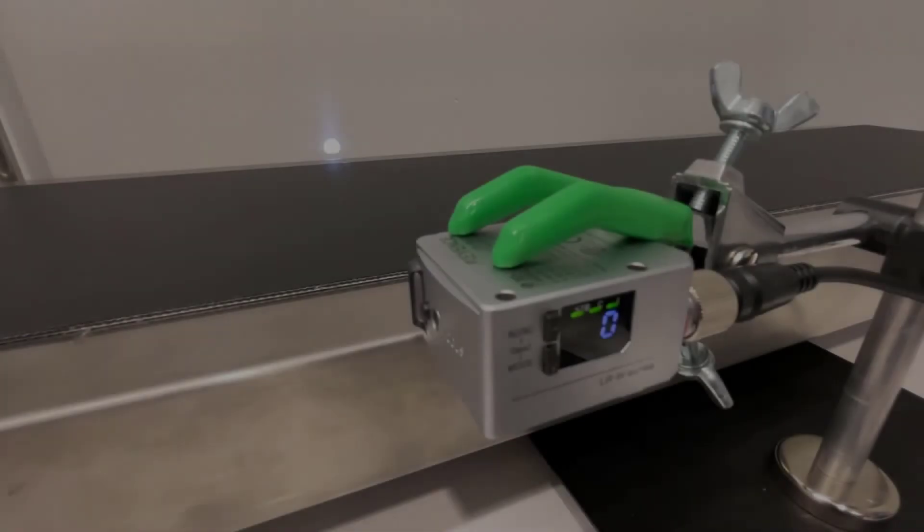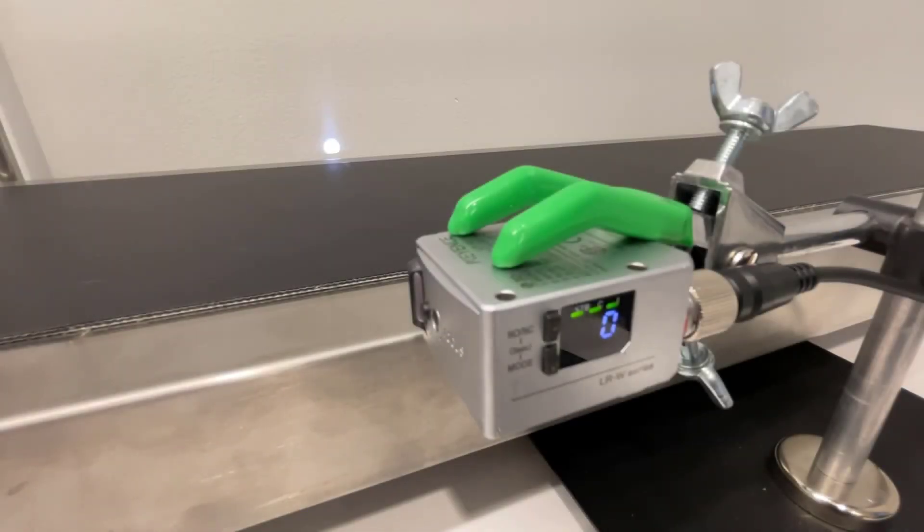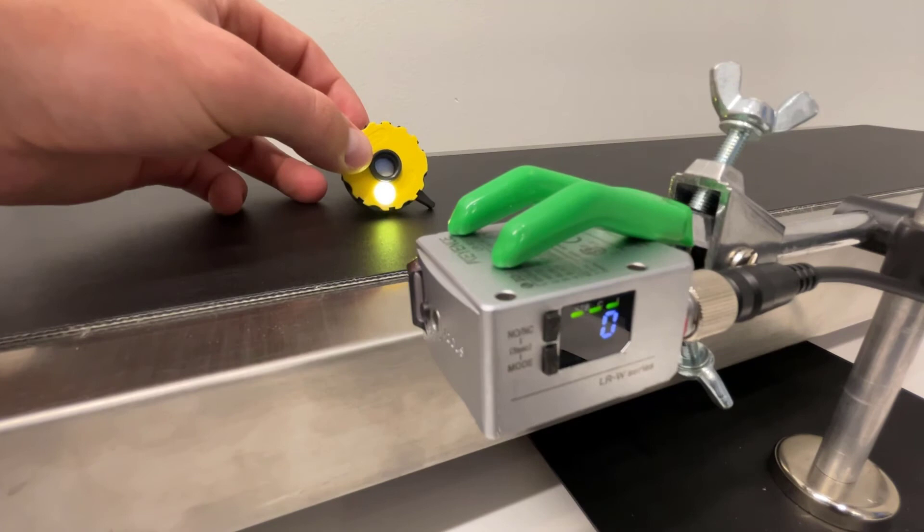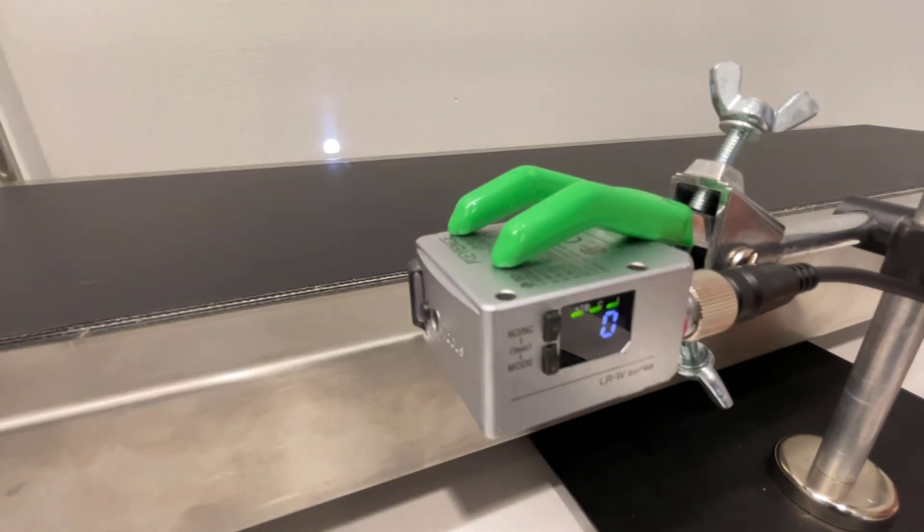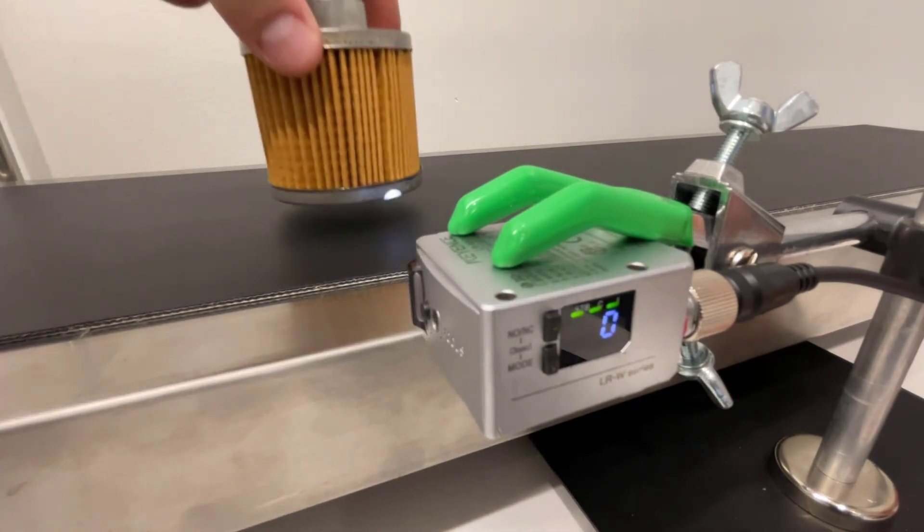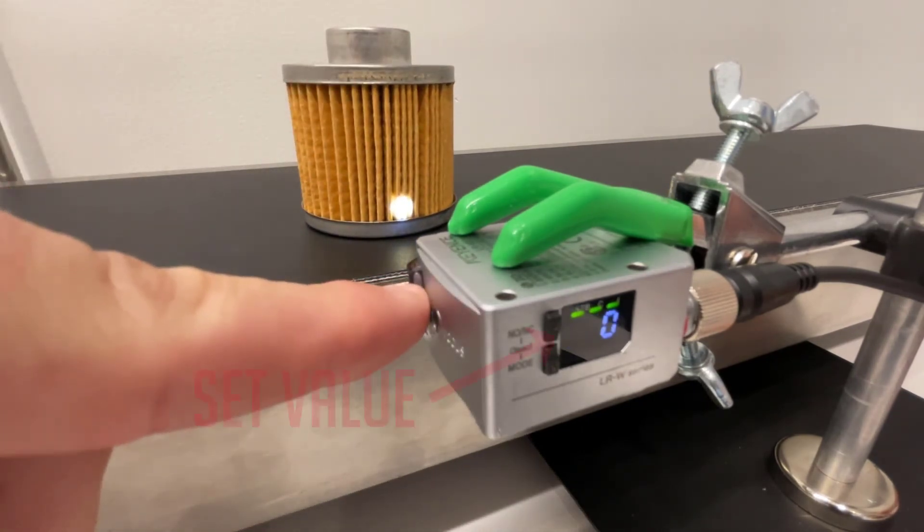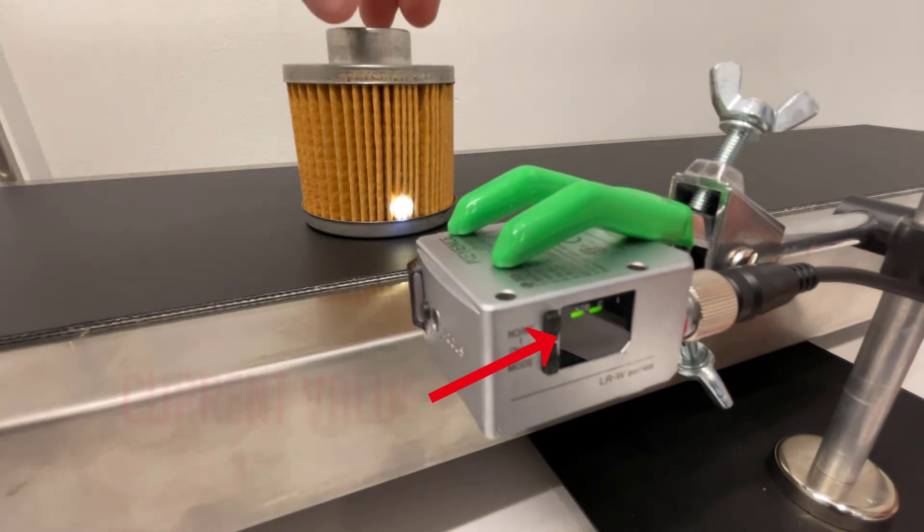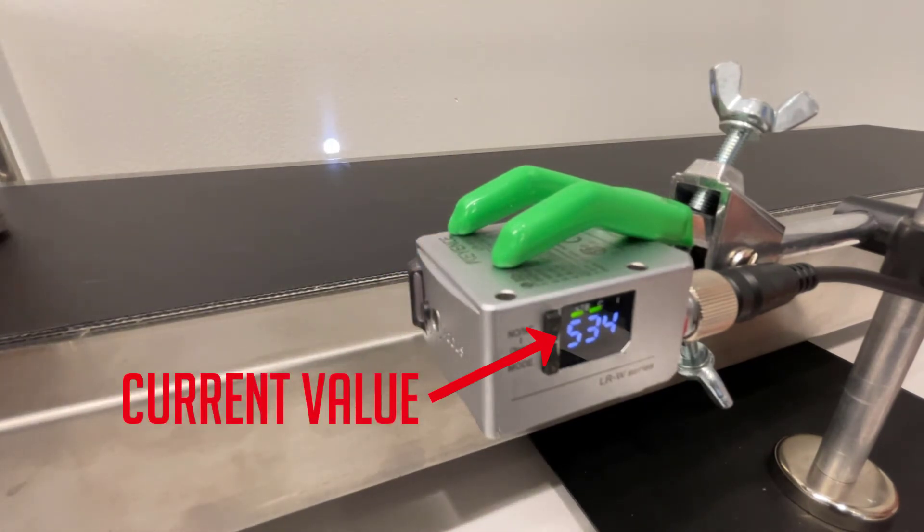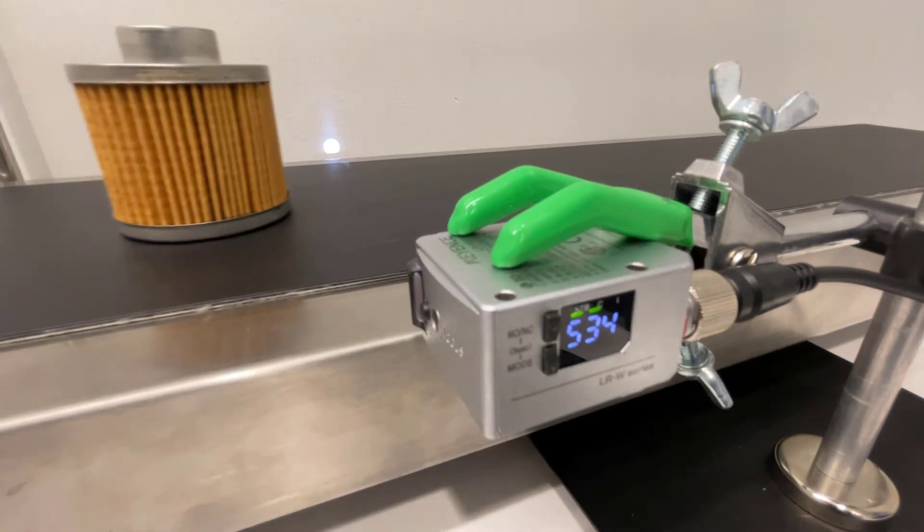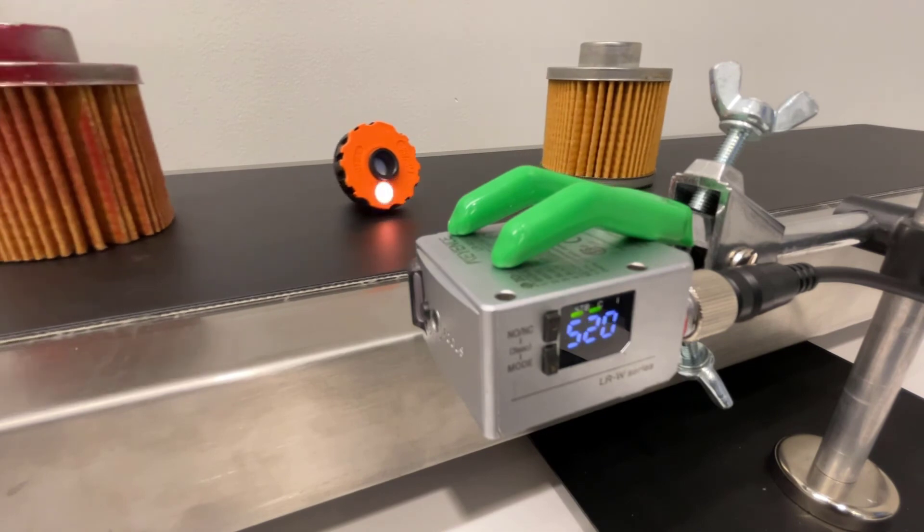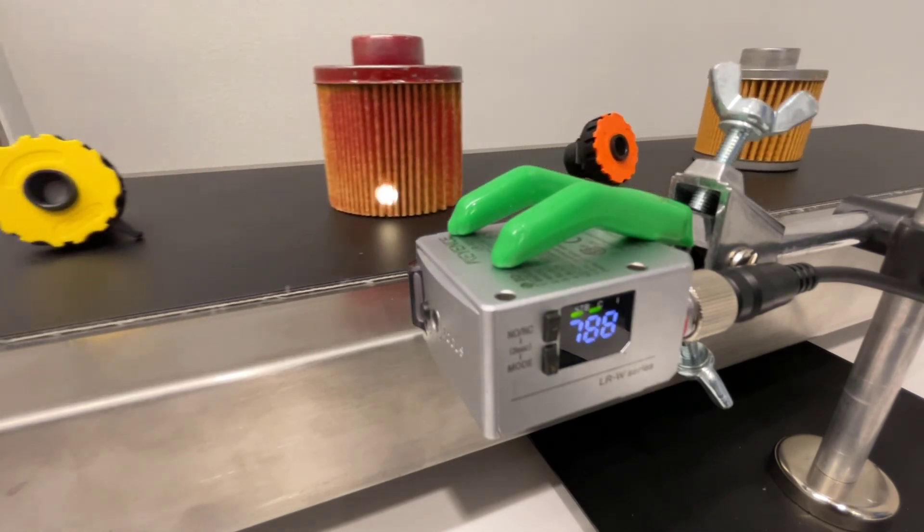A two point calibration may be necessary when differentiating between two appearances. Show the LRW the target that you would like to send an output on, tap the set button, remove the target, and show the second appearance to the LRW, and tap that set button again. You'll see your threshold and then your current value. Now, when we show the LRW multiple appearances that may be similar to the original reference color, we will not send an output. You will only receive an output on the original reference target.